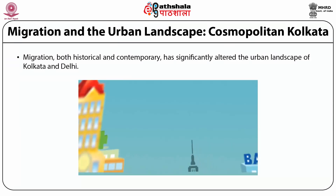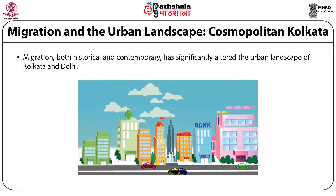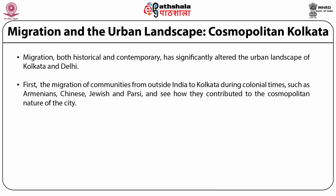Migration, both historically and in a contemporary sense, has significantly altered the urban landscape of Kolkata and Delhi. Migrants have influenced the social and economic aspects of the cities. We bring three different examples of migration: first, the migration of communities from outside India to Kolkata during colonial times, such as Armenians, Chinese, Jewish and Parsi communities; second, a large wave of migration to both Kolkata and Delhi during partition; and third, regional migration particularly from Bihar and Uttar Pradesh to Kolkata and Delhi.